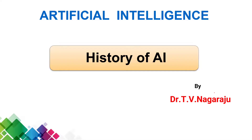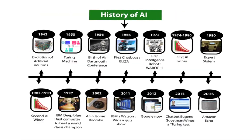Welcome to our channel. In this session we will discuss the history of artificial intelligence. Generally we assume that artificial intelligence is a new technology, but remember, artificial intelligence is a very old technology — older than your imagination. It begins from the year 1943 and evolves continuously.